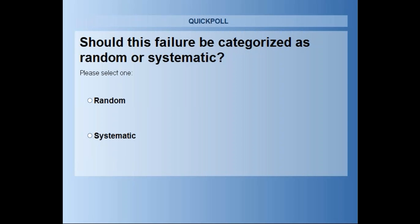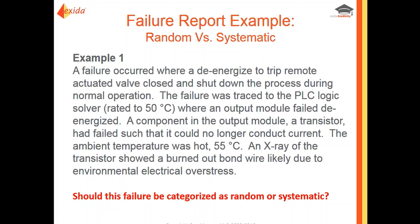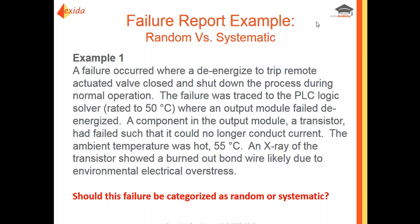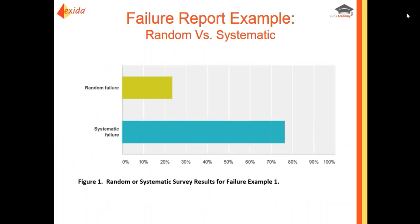In the webinar poll, 29% said random and 71% said systematic. Our ISA survey results showed roughly 25% said random and 75% said it was a systematic fault.